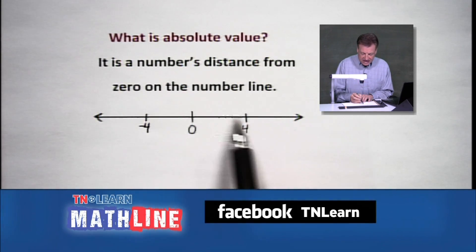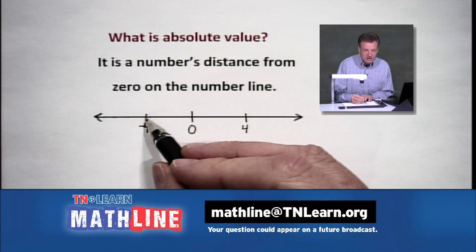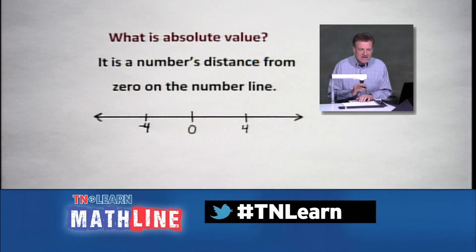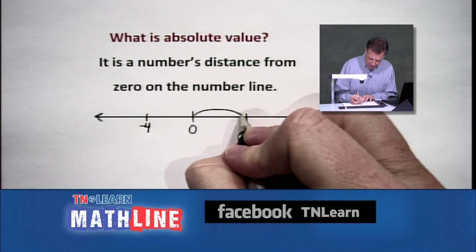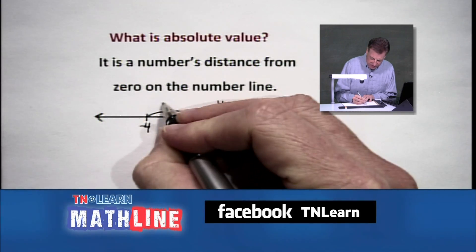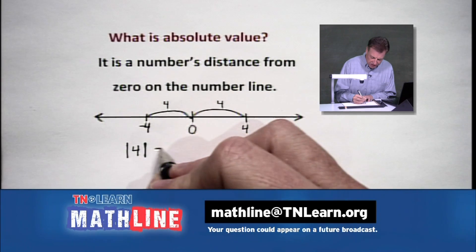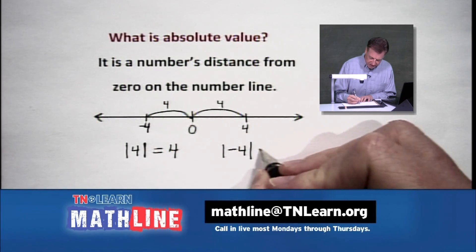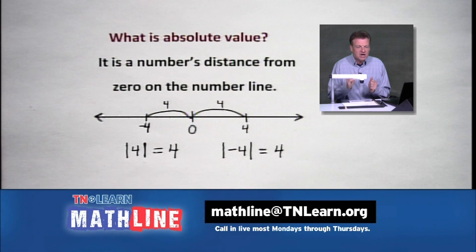These are the same distance. How far away are you from zero? You are four units away here. Going back this way? Pretty much four units. The absolute value of four and the absolute value of negative four are the same thing — they're both four units. The absolute value of four is equal to four, and the absolute value of negative four is also equal to four. These bars simply say: how far is this quantity inside those bars away from zero?